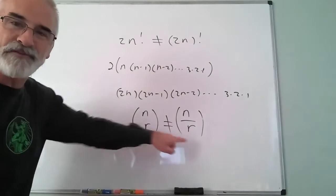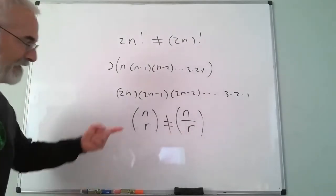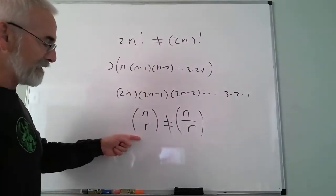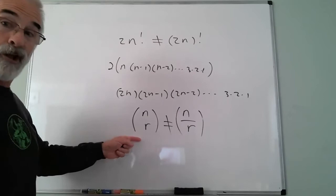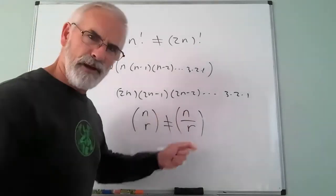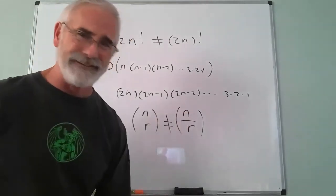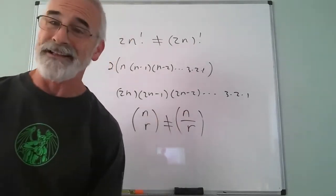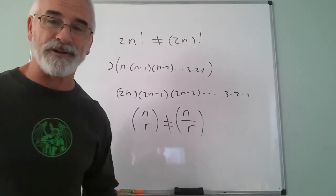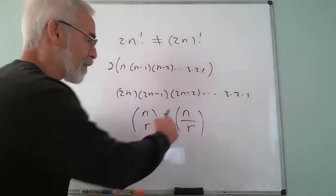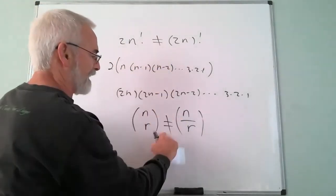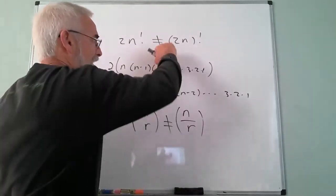The other big one is the combination notation C(n,r) — that is n choose r, which is going to be an integer, possibly a very large integer. This is not the same as n divided by r. There's no quotient bar in combination notation, so these are two very different things.